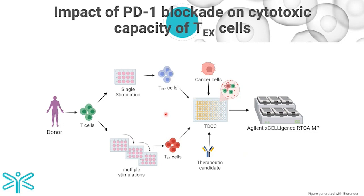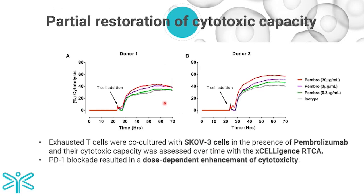Regarding the ability of T-cells to induce target cell cytotoxicity, we used SKOV3 cells as target cells because they express PD-L1, induced target cell cytotoxicity with CD3 and CD28 stimulation, and used pembrolizumab as our PD-1 targeted agent. Data from two different donors shows a clear dose-dependent increase in the ability of exhausted T-cells to target SKOV3 cells, demonstrating the ability of this approach to assess checkpoint inhibitors, especially PD-1 targeted ones.